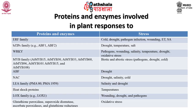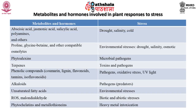Here is the list of different proteins, enzymes, and metabolites involved in plant response to different kinds of stressors. The proteins and enzymes include the ERF family, bZIP family, WRKY, MYB family, NAC family, LEA family, heat shock proteins, LOX family, and enzymes responsible for oxidative stress. Common metabolites and hormones include abscisic acid, salicylic acid, jasmonic acid, polyamines, proline, phytoalexins, terpenes, phenolic compounds, alkaloids, ROS, and some unsaturated fatty acids.